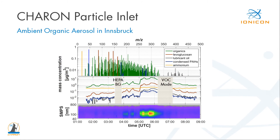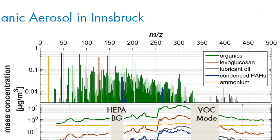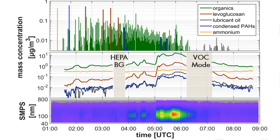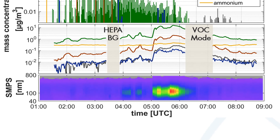I want to conclude this introduction to the Caron method with a quick example. This figure shows a typical wintertime pollution event here in Innsbruck. On the top panel an average mass spectrum is plotted, with highlighted compounds including ammonium nitrate, levoglucosan, lubricant oil, and condensed PAHs. The middle panel shows the time series of these compounds — ammonium stays very stable throughout the whole period, but at around 7 am local time the organics increase by about a factor of 10 within a few minutes. A big fraction of this is characterized by levoglucosan, a well-known biomass burning marker, while lubricant oil and condensed PAHs predominantly assigned to traffic emissions also clearly increase. On the bottom panel, results from SMPS measurements clearly show a similar pattern.